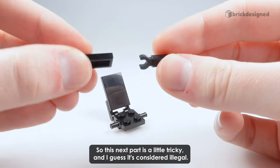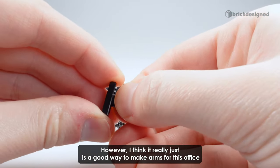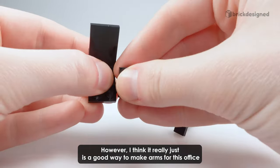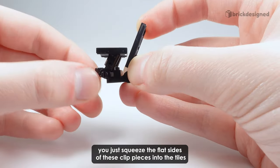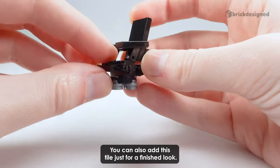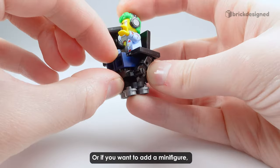So this next part is a little tricky and I guess it's considered illegal. However, I think it really just is a good way to make arms for this office chair. Basically, you just squeeze the flat sides of these clip pieces into the tiles and they fit in there pretty snug. You can move them around to be angled. You can also add this tile just for a finished look, or if you want to add a minifigure.